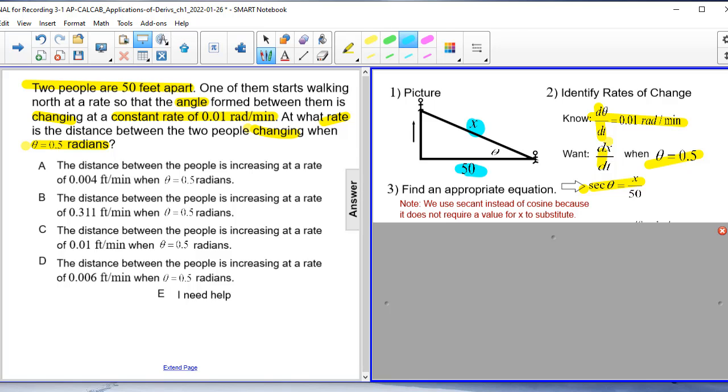Why I suggest using secant instead of cosine or any other trig function is that we're not required to know the value of x to substitute. And since we don't know the value of x, it gives us a nice little work around. You can consider that a pro tip.